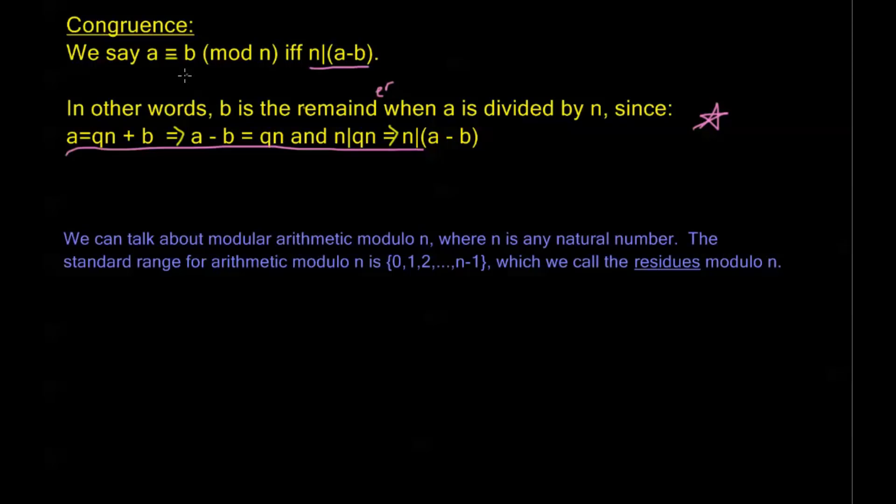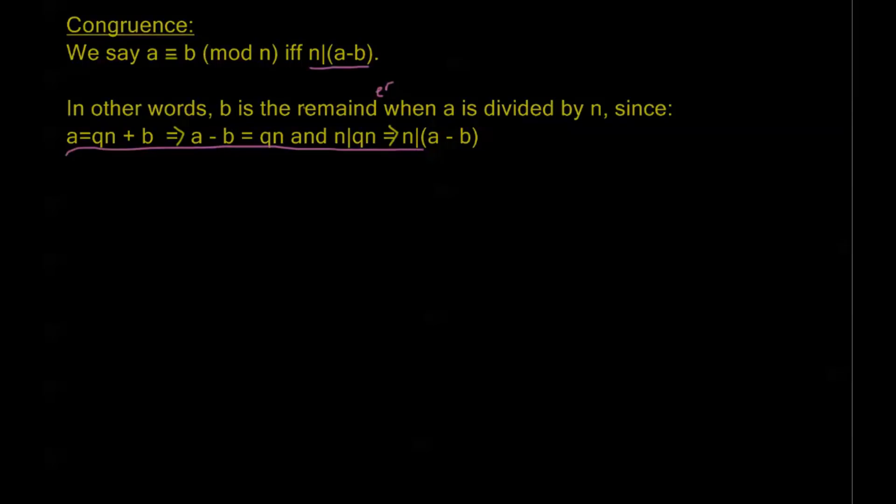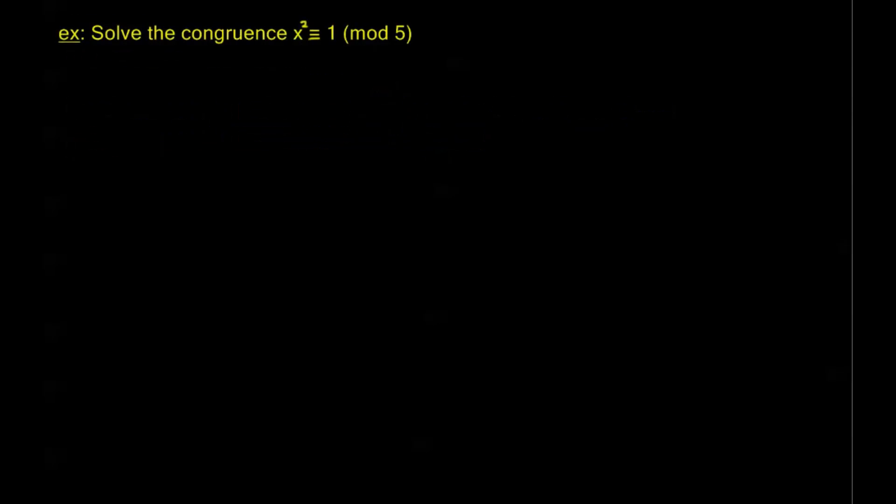Usually for a congruence problem, you're going to start with some a that is not a residue, and you want to figure out what the residue b is that a is congruent to. So let's take a look at some examples. So are we ready for examples? Yes, we are. Solve the congruence x squared congruent to 1 mod 5. Now there's two different ways that we can do this problem. So I'll outline these both as methods. Let's see, method 1.